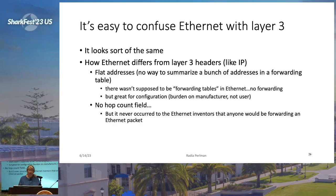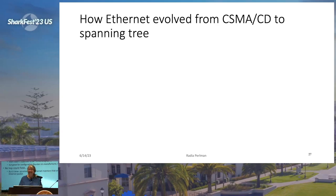If you look at an Ethernet packet — destination, source, and data — and a layer three packet, they look kind of the same, except for the hop count field. What's the hop count field for? If the topology is changing, forwarding tables will be inconsistent and you'll have temporary loops while the topology settles down. It's really irresponsible to be forwarding something without a hop count. Ethernet has flat addresses instead of addresses carefully assigned so you can draw a circle around a portion of the network and summarize it. And there's no hop count field — not because the Ethernet designers didn't know about hop counts, but because it never occurred to them that anyone would be forwarding based on that header.